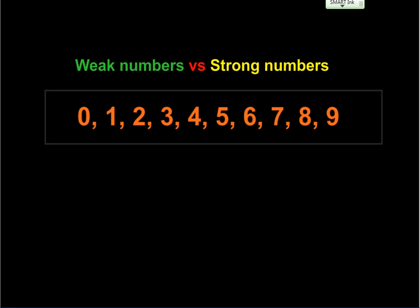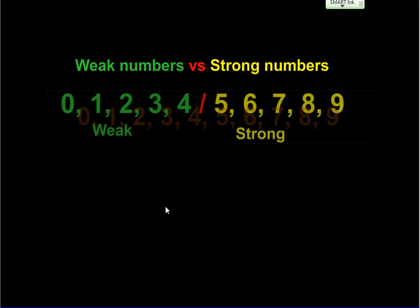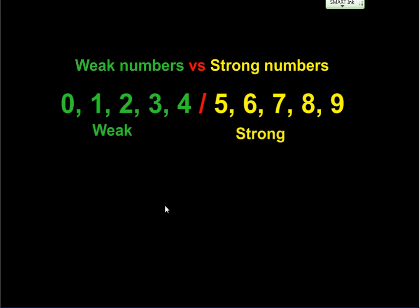The first concept is weak numbers versus strong numbers. If you look at all the individual single digits, 0 through 9, they can be broken into two sets: weak numbers and strong numbers. The weak numbers are 0, 1, 2, 3, and 4, and the strong numbers are 5, 6, 7, 8, and 9. We need to know this because it's important to determine whether a weak or strong number is being used when we're rounding.